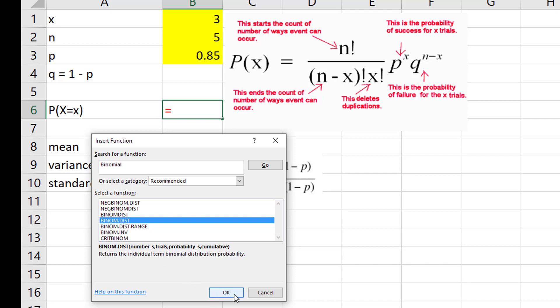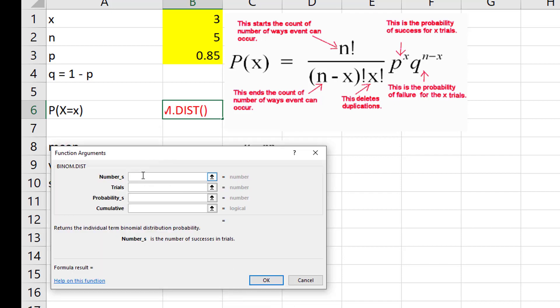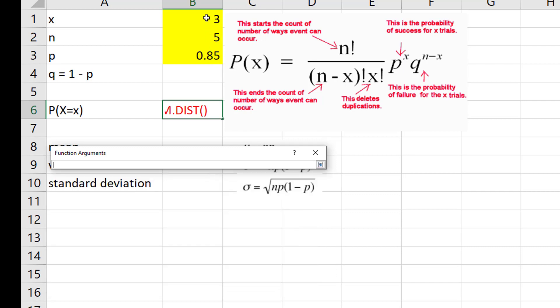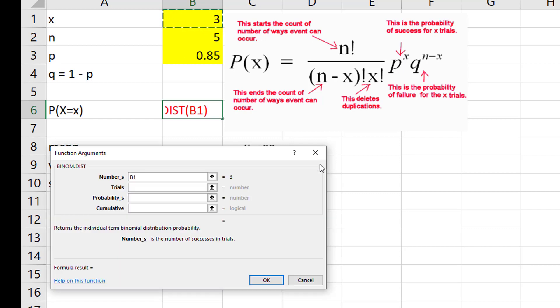Notice here it actually gives me boxes. So if I click on these up arrows, it'll take me back to my cells. So number of successes, click the up arrow, click x, click this down arrow to come back. Number of trials, and I can just manually type, in this case would be B2. The probability of success would be B3. And in this case, cumulative, I do not want it to be cumulative. So notice down here in the box it says for cumulative use TRUE, otherwise use FALSE. So I am going to type FALSE and I click OK.